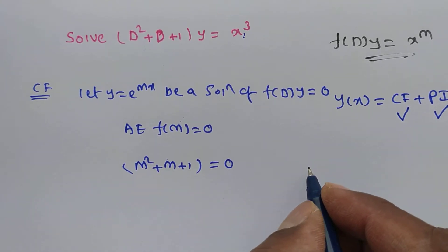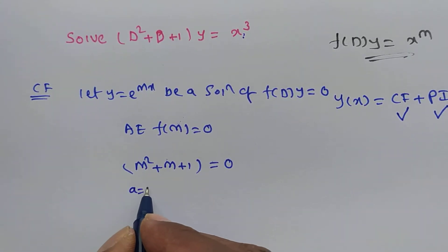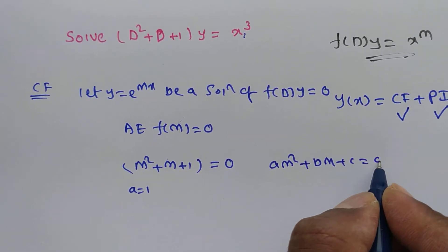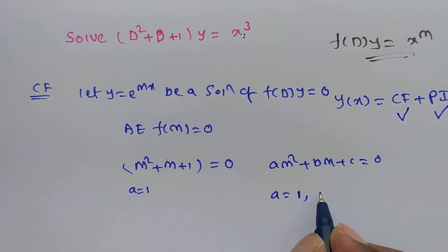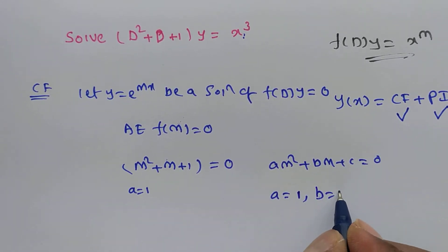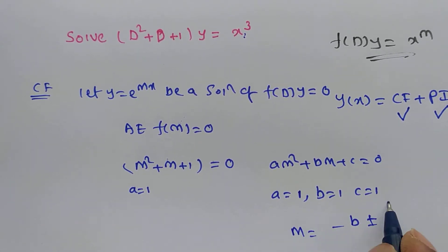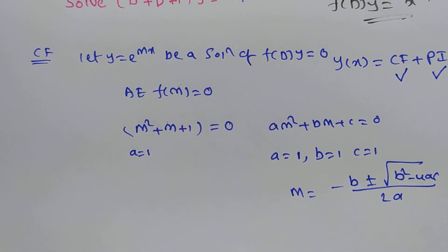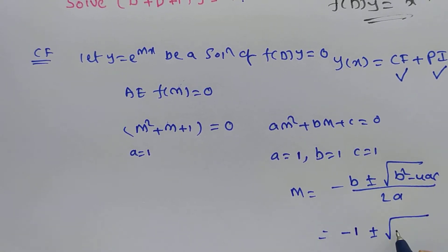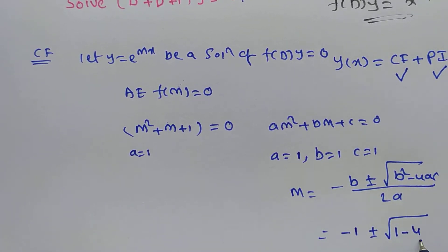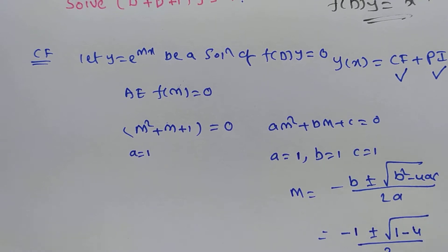Comparing m² + bm + c = 0, we have a = 1, b = 1, c = 1. So m = (−1 ± √(1 − 4·1·1)) / (2·1), which gives m = (−1 ± √(−3)) / 2.